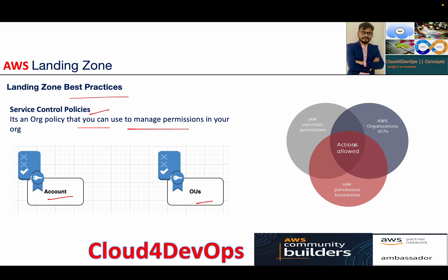In this particular circular diagram, the intersection — we have IAM roles, users, permissions, then we have an SCP, permission boundaries, and the intersection is basically your action allowed. Your organization is providing you a centralized governance system and management of multiple accounts with the help of AWS Organization. You can use SCP to control all your IAM principals — your IAM users and roles — and they will follow that particular policy attached to it. This makes it easier to fine-tune your strategy to meet the exact need of your company.